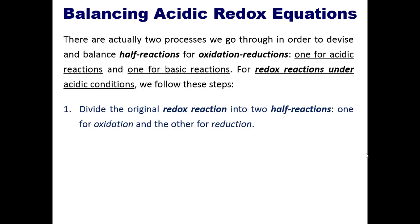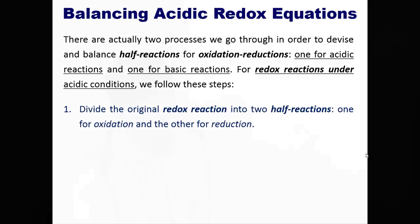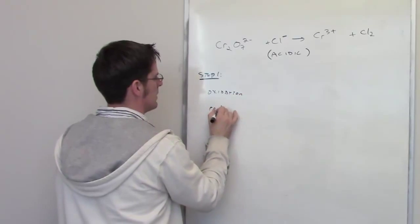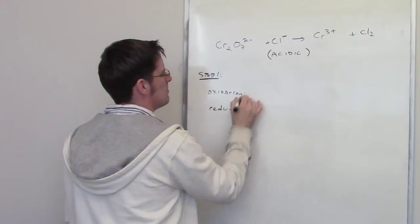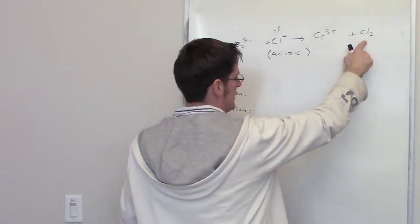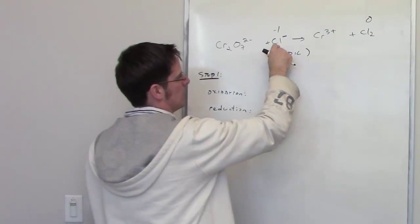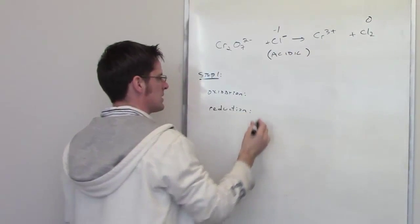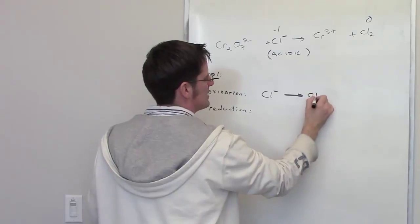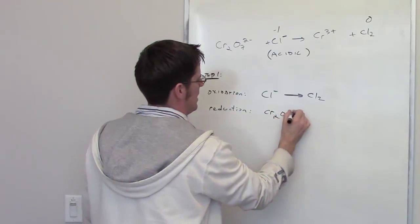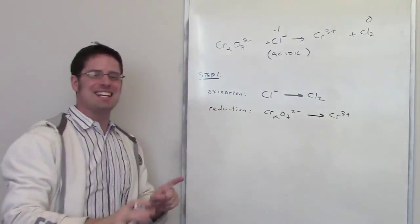Step one is that we divide the original redox reaction into two half-reactions — one for oxidation and the other for reduction. Looking at chlorine: Cl⁻ has a negative one oxidation number, and Cl₂ has a zero oxidation number. Going from negative one to zero means it loses electrons, becoming more positive, so chlorine is being oxidized. The oxidation half-reaction is Cl⁻ → Cl₂. By default, the other half-reaction is the reduction step.